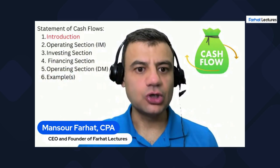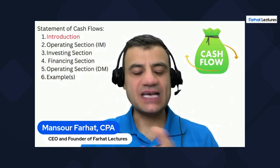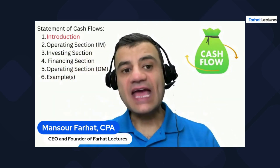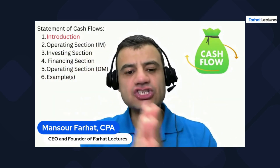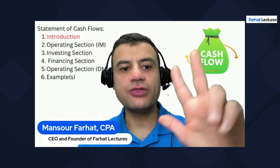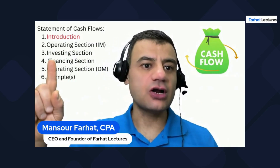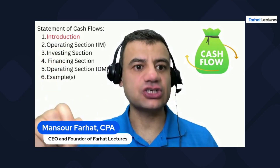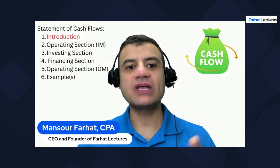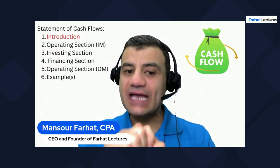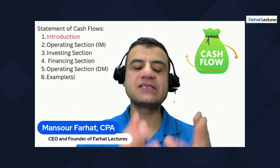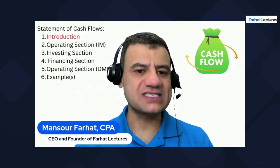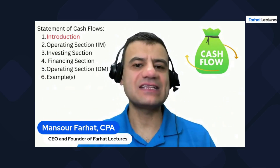I will give you an overview, the purpose of it, what sections there are, what each section entails — the big picture. Then we will look at each section separately. There are three sections: the operating section, investing section, and the financing section. For the operating section, we're going to cover two methods — the indirect method and the direct method. There are two ways to compute the operating section. Then we'll work one or two examples to consolidate everything we learn.